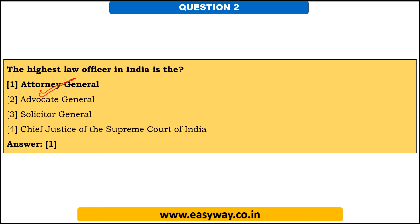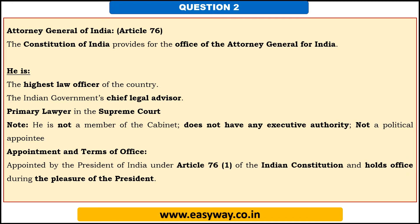You need to have a list of important amendments of the constitution, as well as important provisions regarding the prime minister, president, chief minister, or governor. Article 76 of the constitution tells about the Attorney General of India — the power is derived from this particular article. The Attorney General can be called by various names: the highest law officer of the country, the Indian government's chief legal advisor, and primary lawyer in the Supreme Court. He is not a member of the cabinet and does not have any executive authority, nor is he a political appointee.